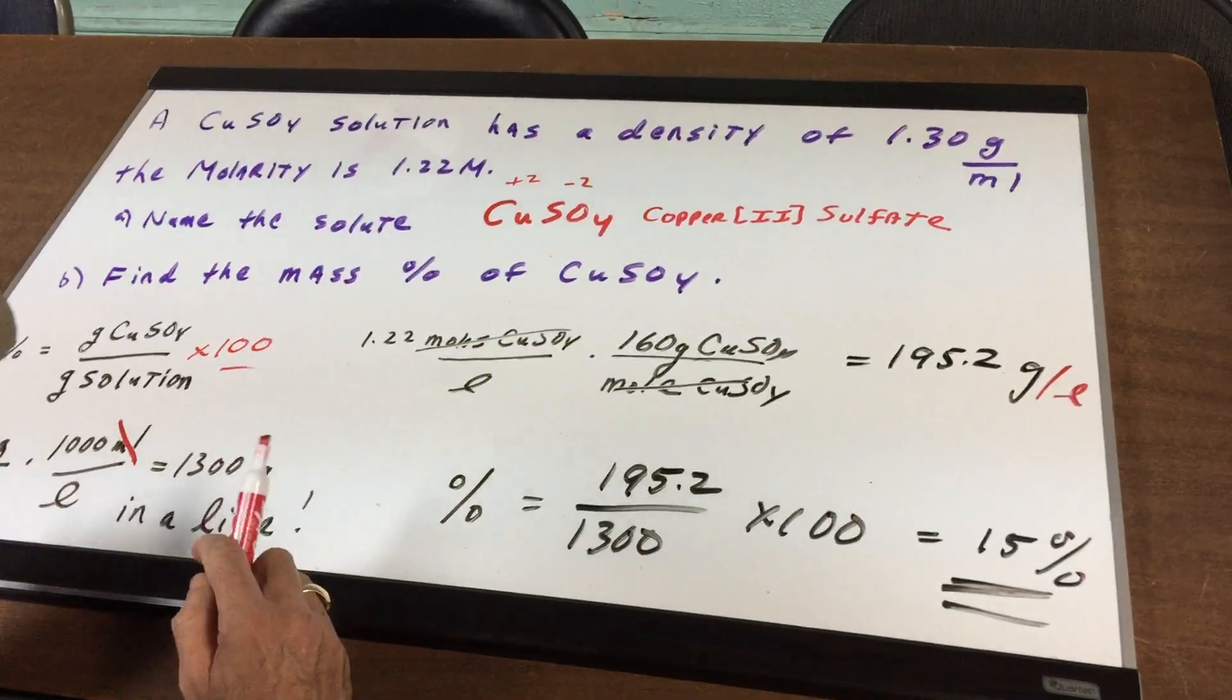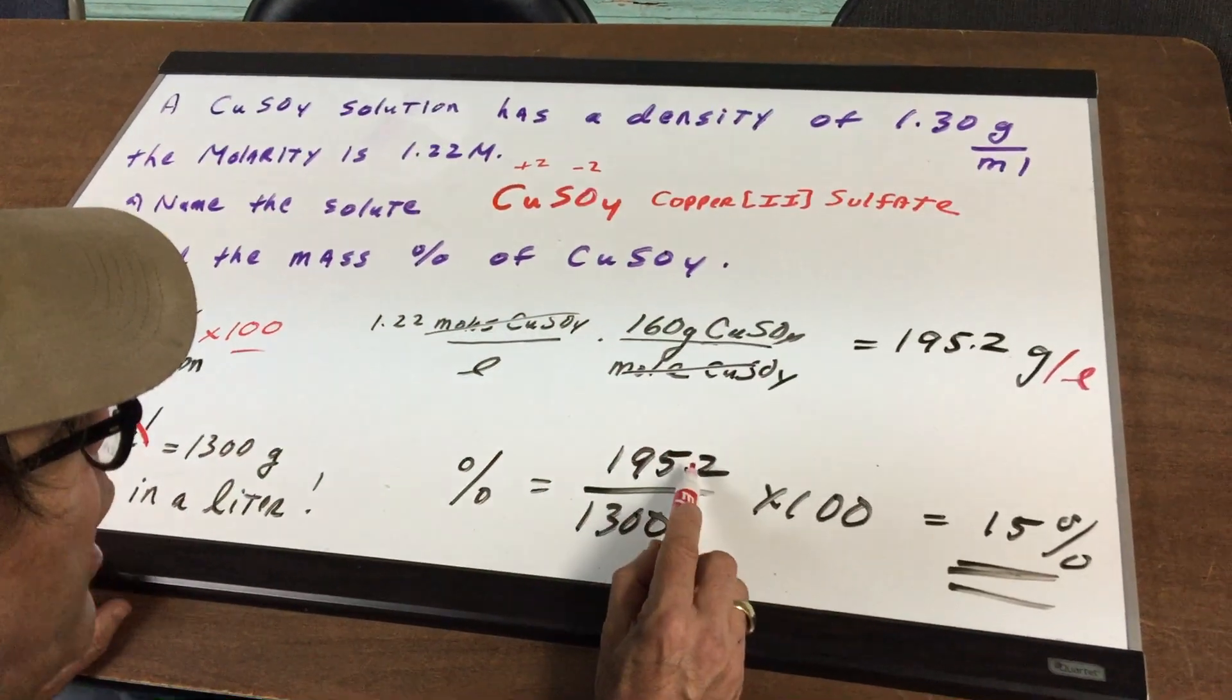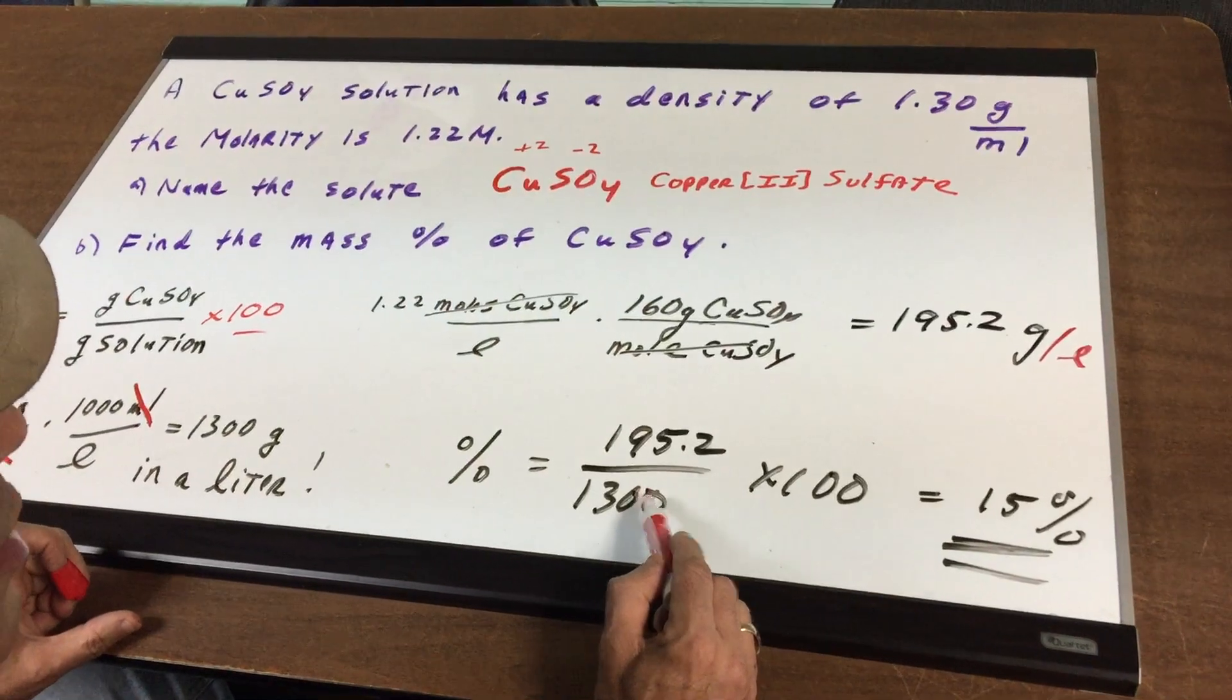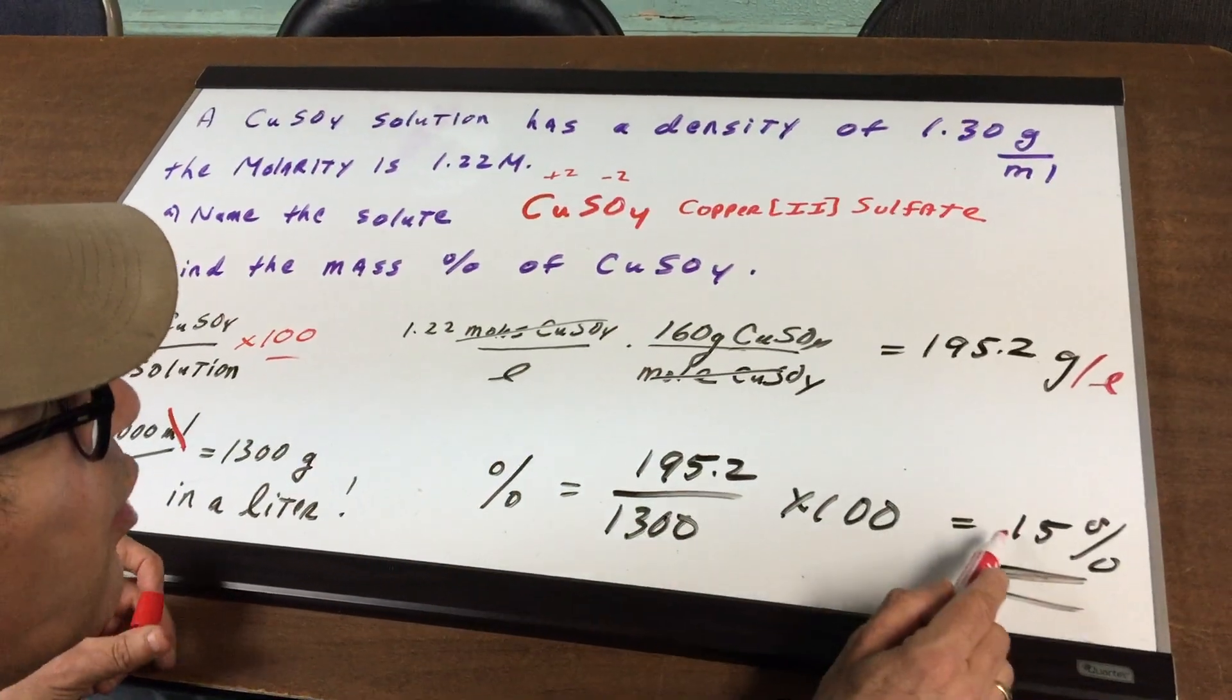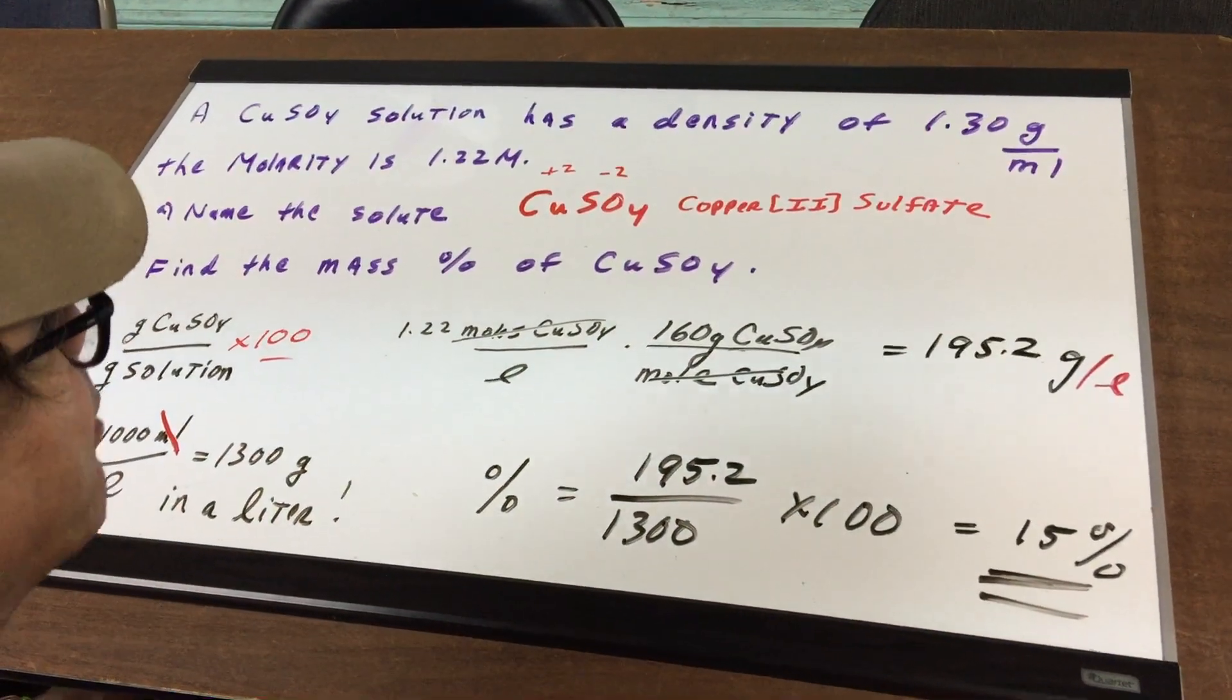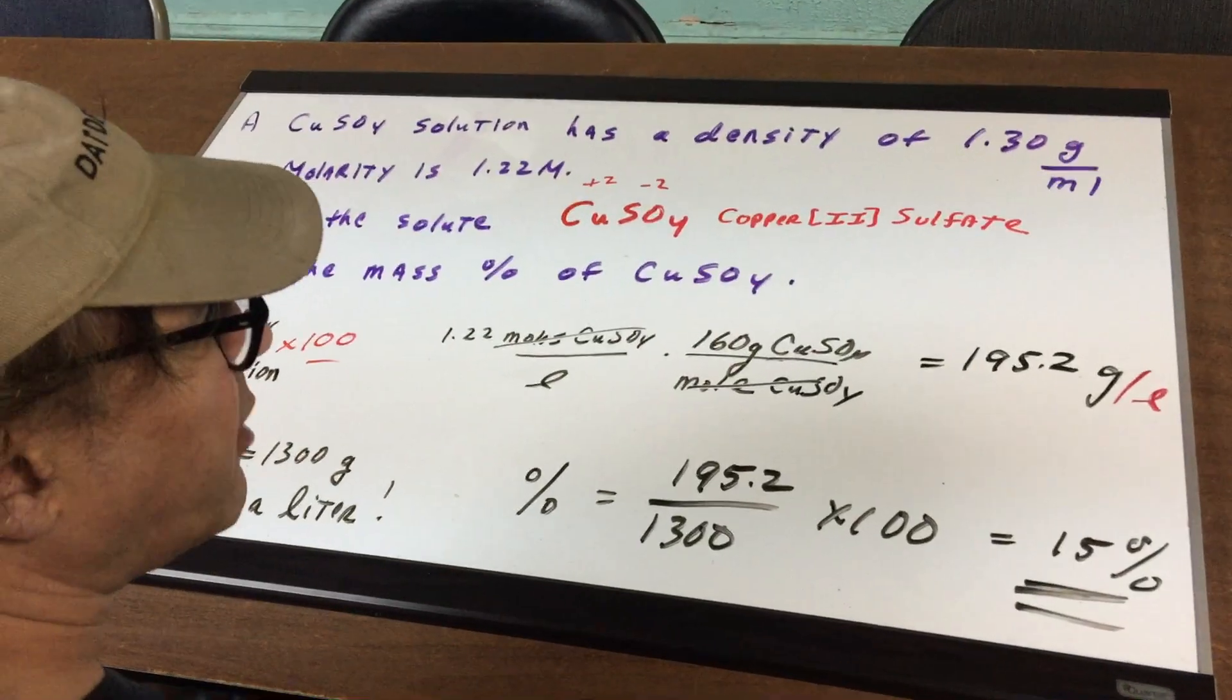So now that we know we have a liter of solution, we want to get the mass percent. So we have 195.2 grams of the solute over the total times 100. On the DAT, the numbers will be much nicer, but done with a calculator, we get 15%. I hope this gives you some good clarity on the way I approached this very important question that you'll see on the DAT exam. Okay, good luck to you. Bye-bye.